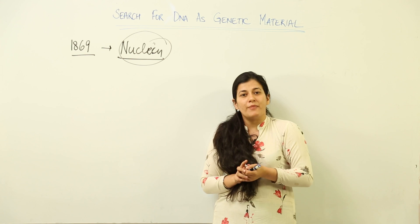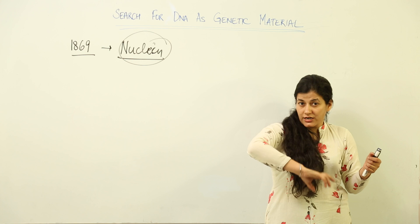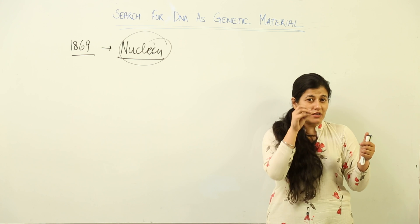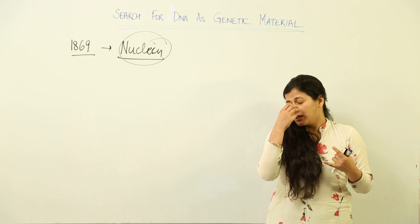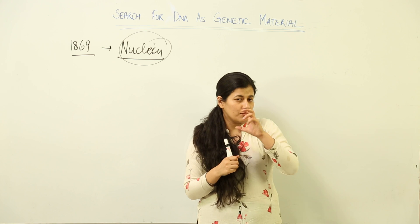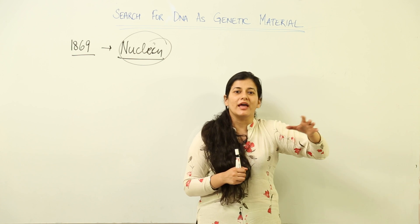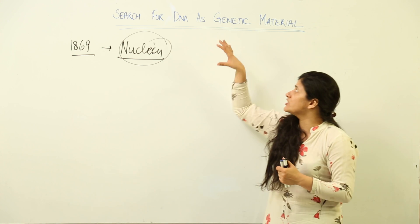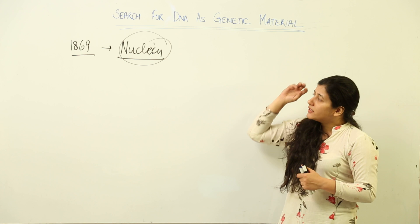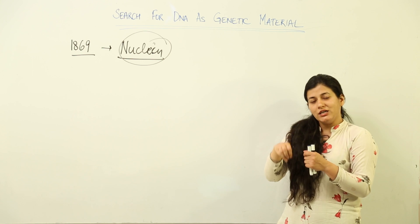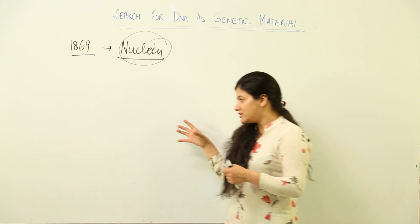Simultaneously, important developments were taking place in genetics. Studies by Thomas Hunt Morgan, Mendel, and Sturtevant pointed towards chromosomes as the main site of the hereditary mechanism. DNA is the genetic material — meaning whatever is governing the hereditary purpose — and the search for it was within the nucleus, around the chromosomes, which turned out to be DNA.